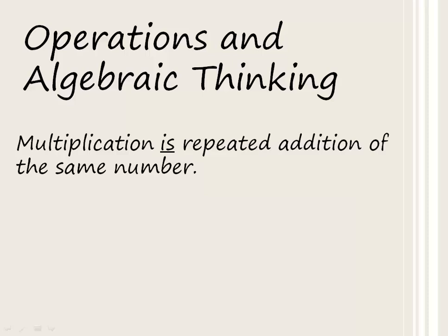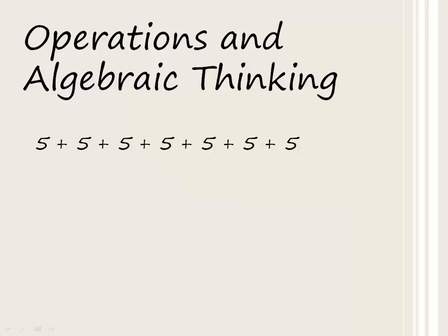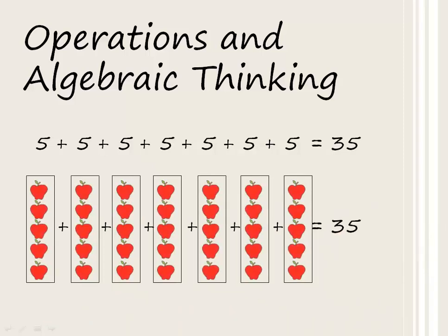Going back to the standard, if we say five times seven, this physically means to repeatedly add five onto itself seven times. In other words, five plus five plus five plus five plus five plus five plus five, which equals 35. Using physical objects, they will be grouped together as shown.